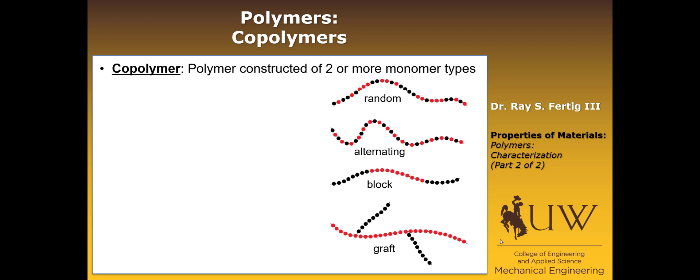One other category of characteristics, and we've briefly mentioned these before when we separated homopolymers from copolymers, but there's subcategories of copolymers. So remember that a copolymer is a polymer that's made of two or more monomer types. And so in these pictures, the black atoms correspond to, let's say, type A monomer, and the red atoms might correspond to type B monomer.